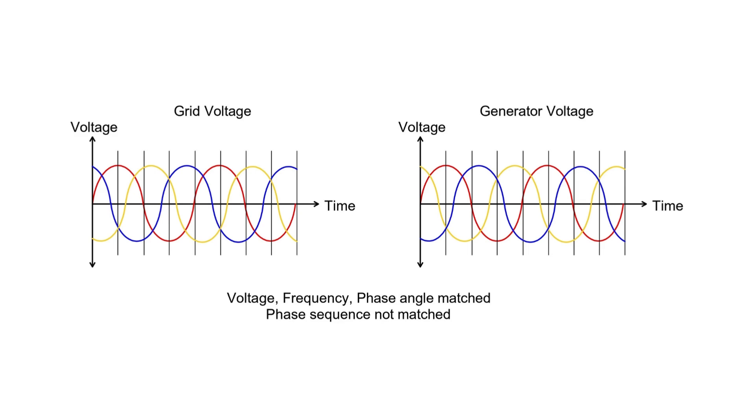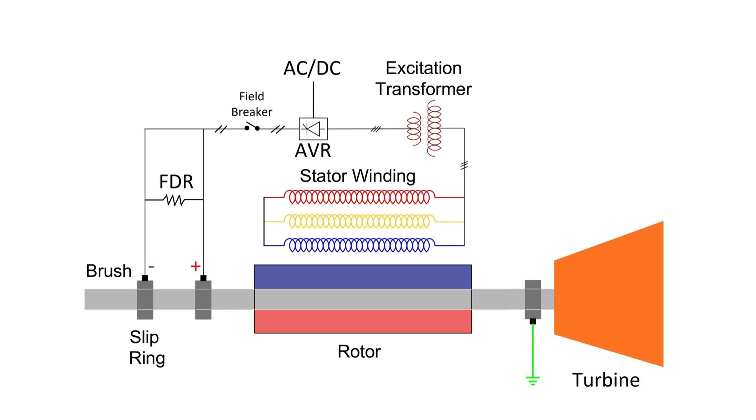So, how do we achieve this match? We use the turbine and AVR to align the generator's voltage profile with the grid's.